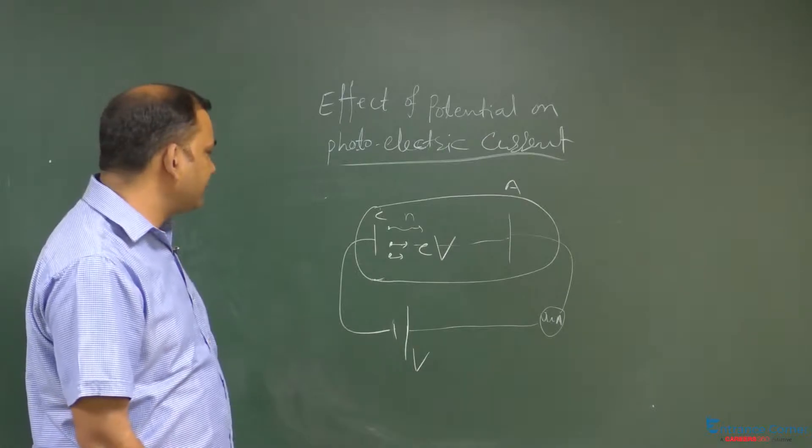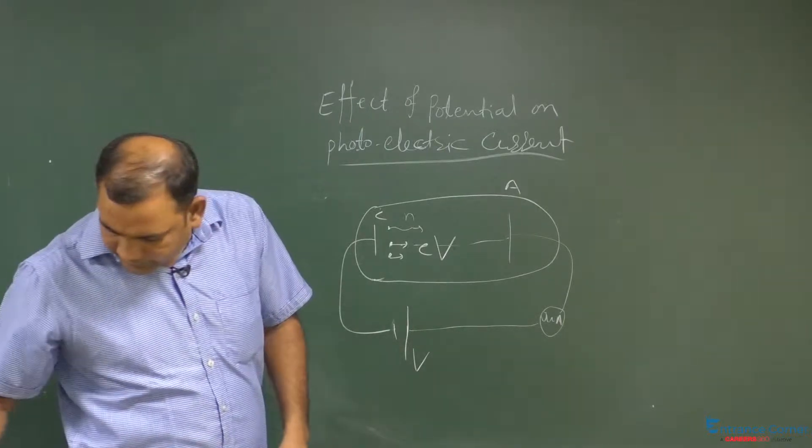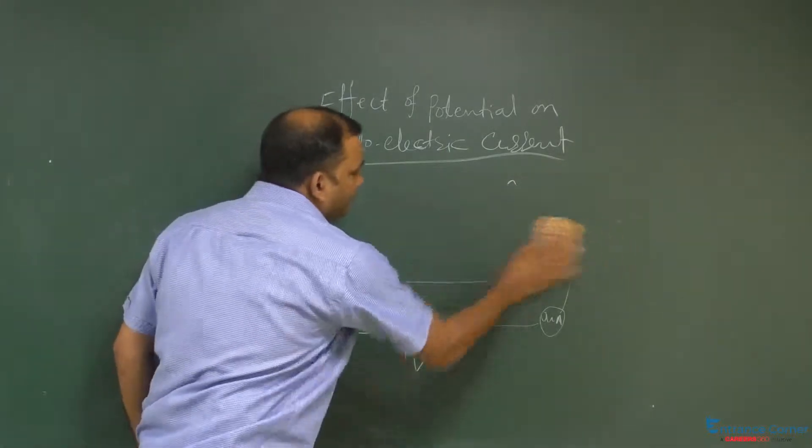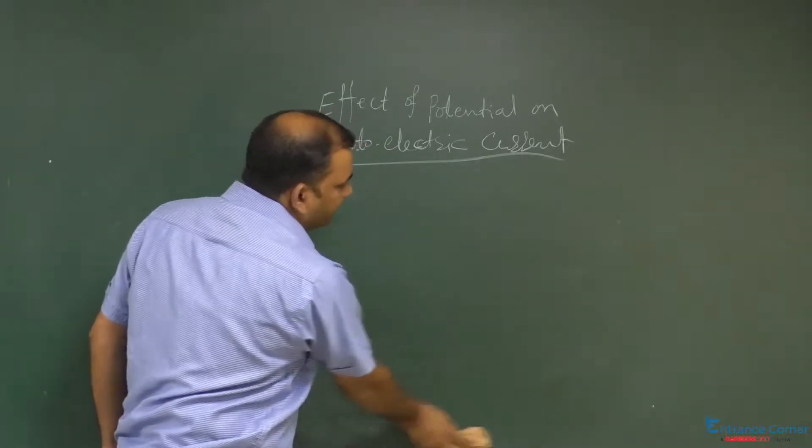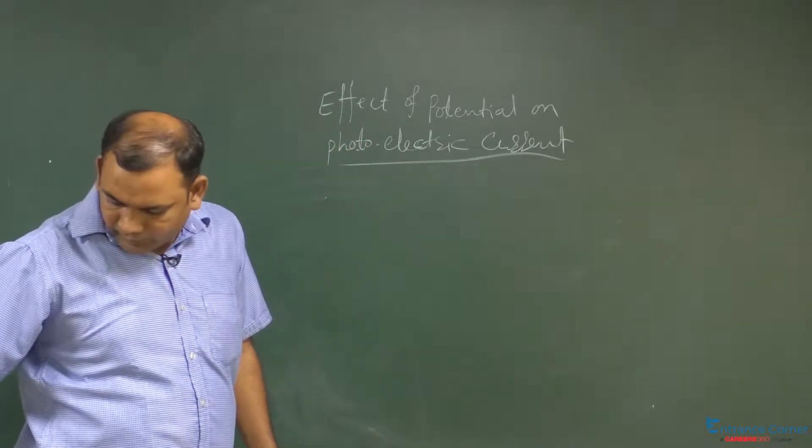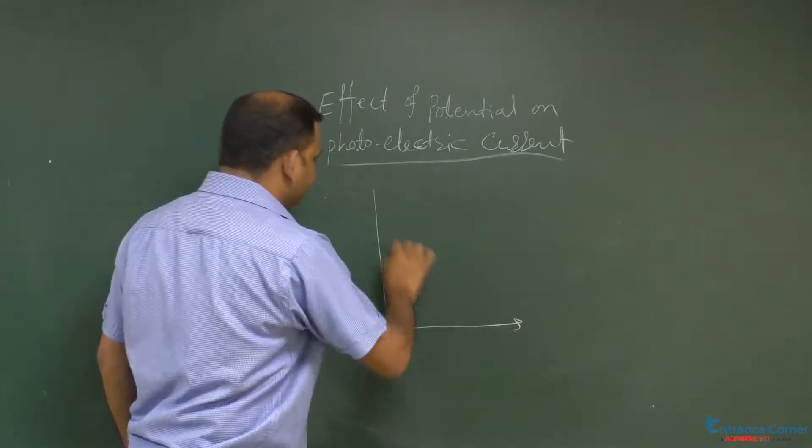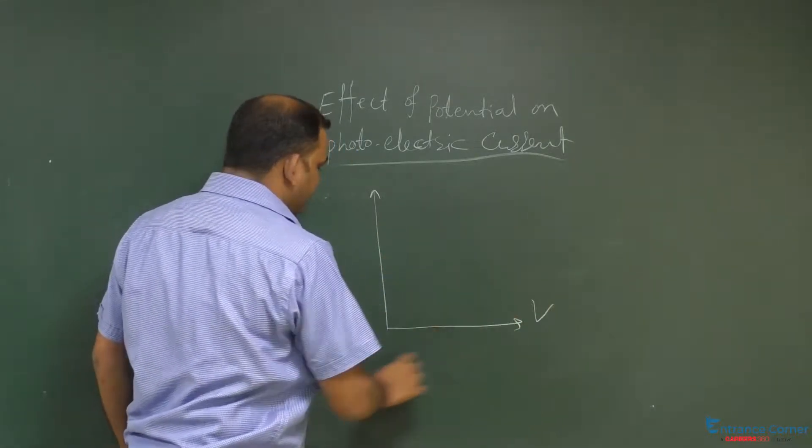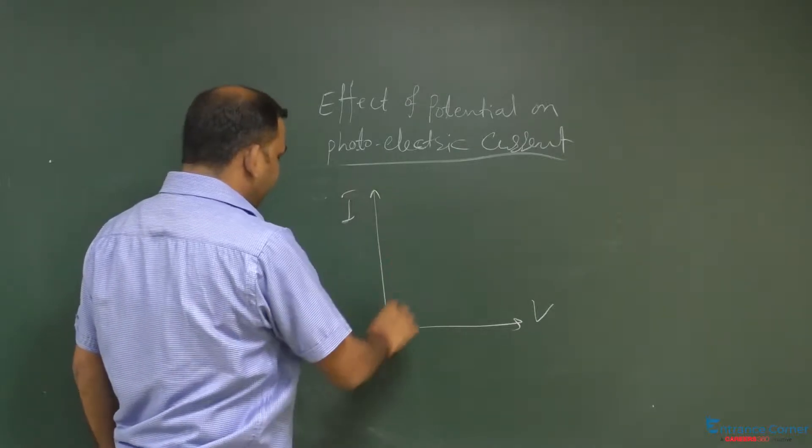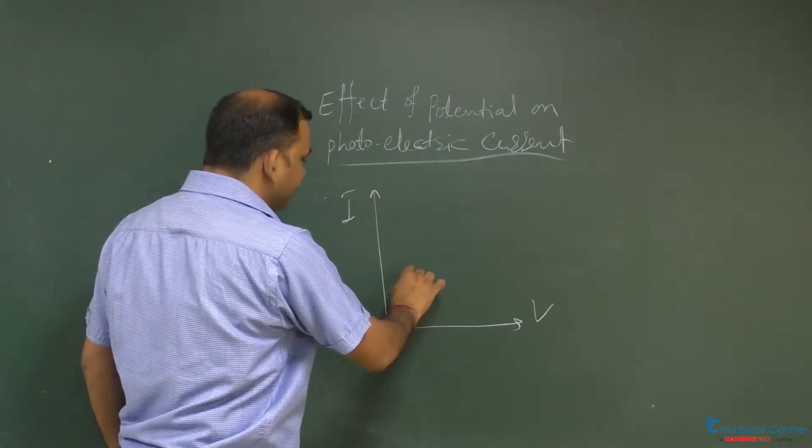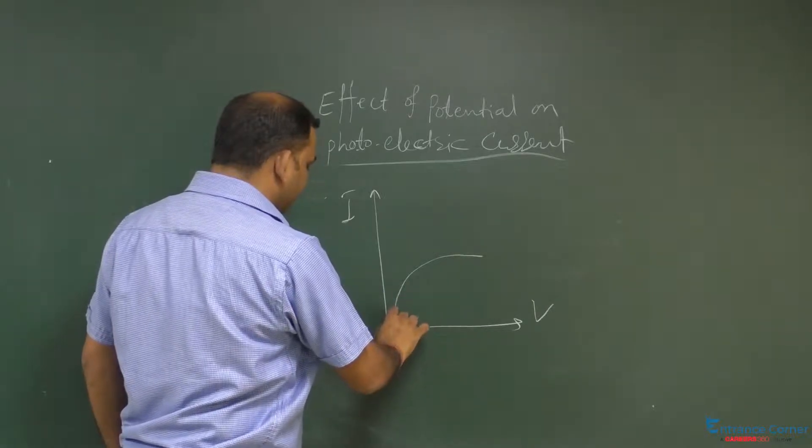There is no change in the current after increasing the potential. So this current is known as saturation current. If we draw the graph between potential and photoelectric current, then it will come out like that. This is potential and this is current I. Initially it will increase, then becomes constant.